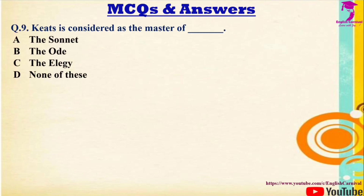Question 9: Keats is considered as the master of — Options: A) the sonnet, B) the ode, C) the elegy, D) none of these. Correct answer is B — the ode.